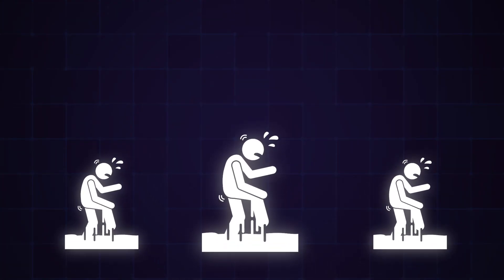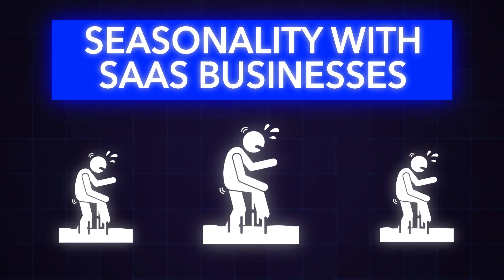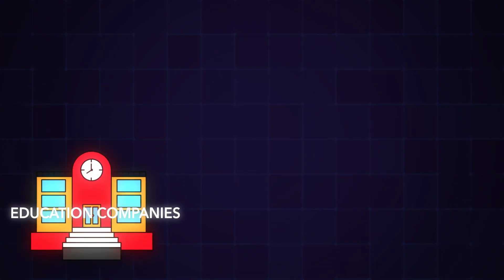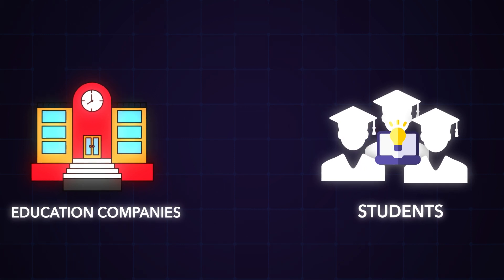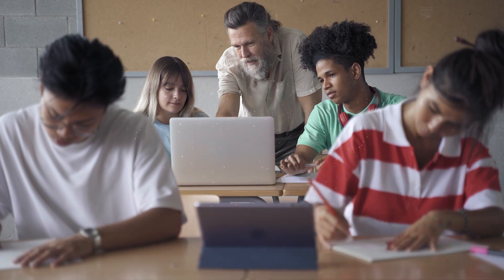Another thing some folks struggle with is seasonality with SaaS businesses. This isn't true for every business — Forecaster, for example, doesn't have a lot of seasonality. But there are some SaaS businesses with a very high degree of seasonality, specifically education companies. If you're selling educational software for students, you may have a lot of sales when school's in session and very little when it's out of session. If you do have a highly seasonal SaaS business, that can be another tricky aspect of forecasting.